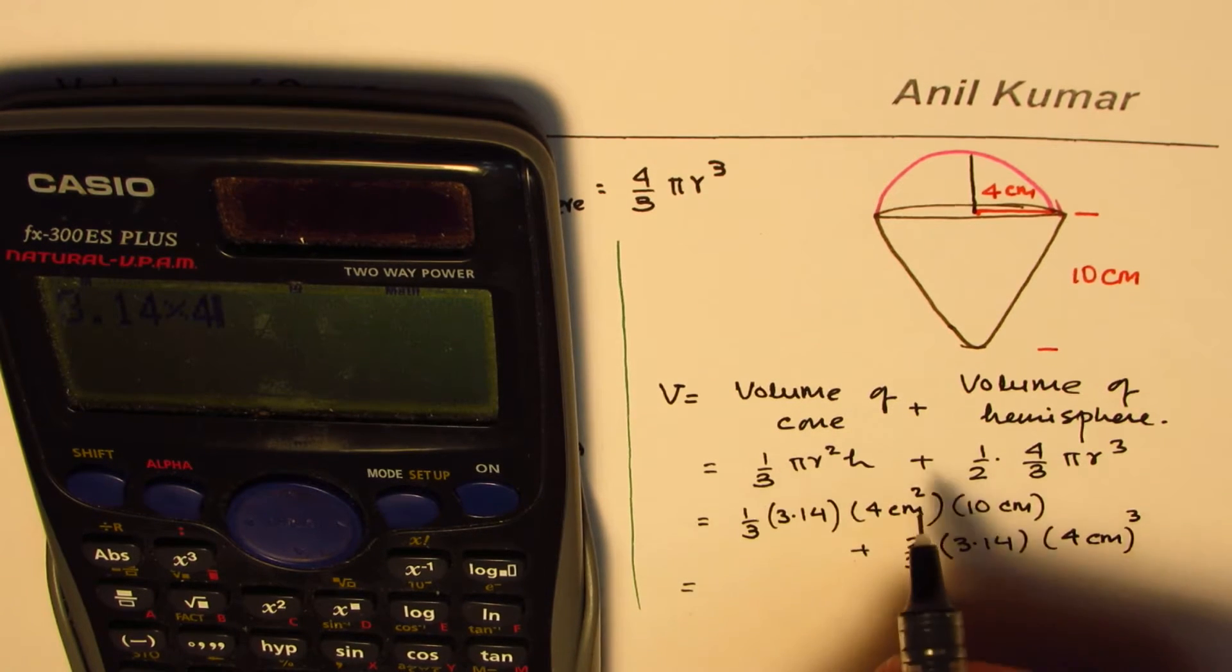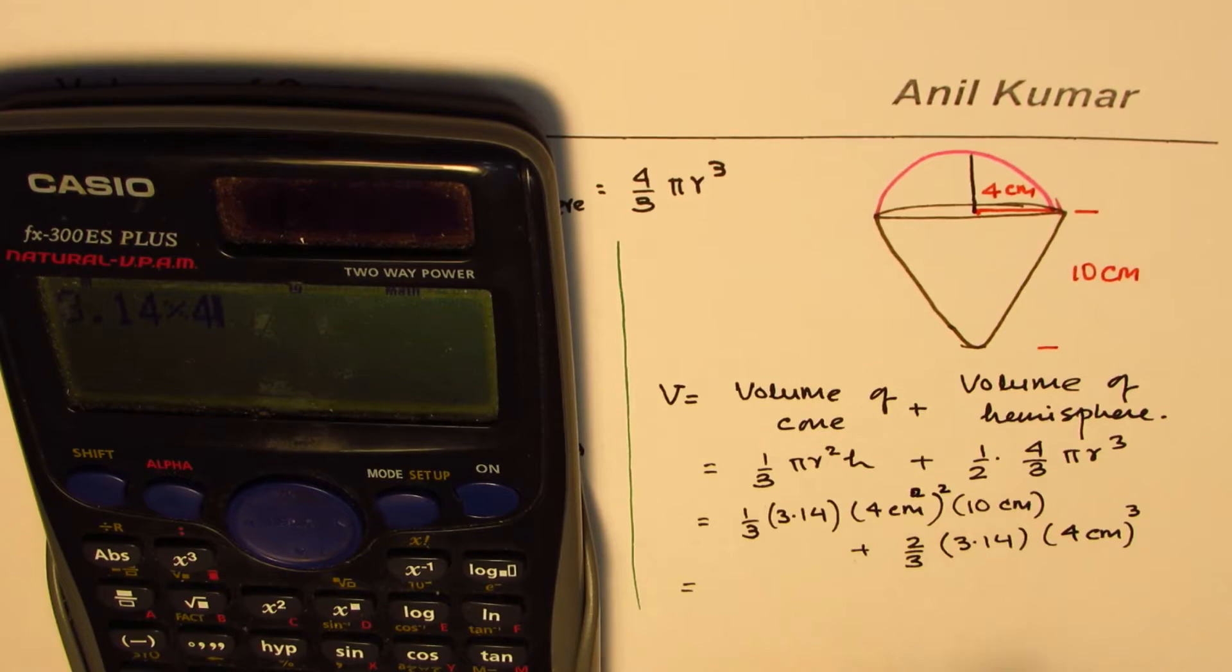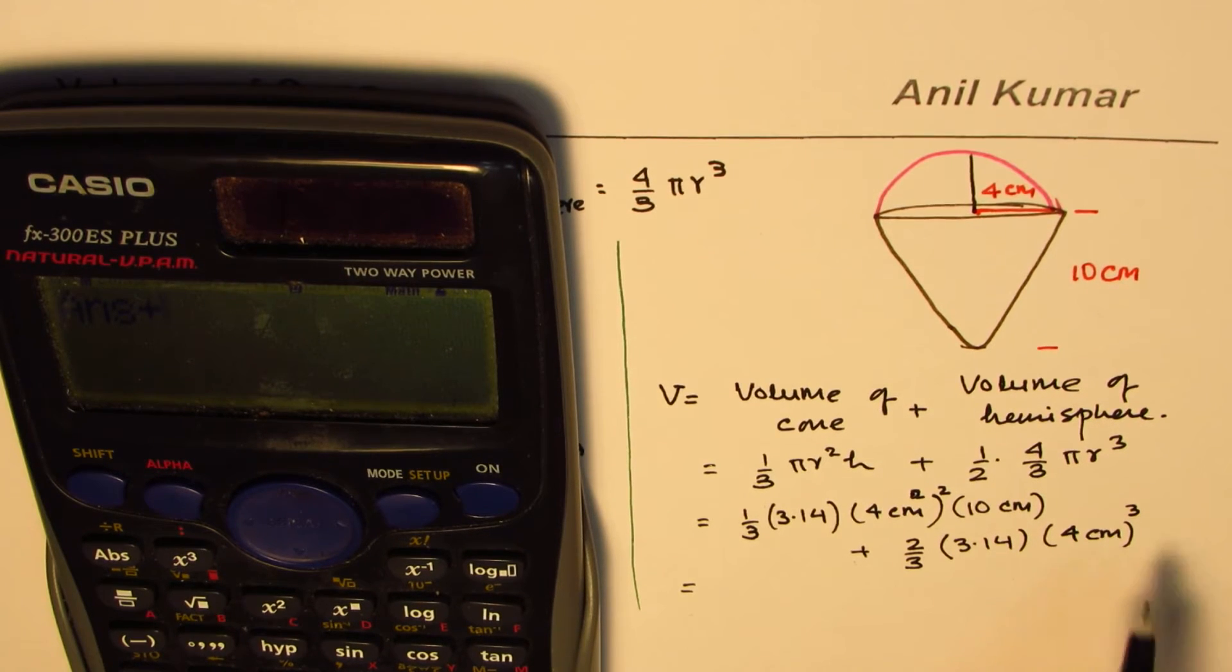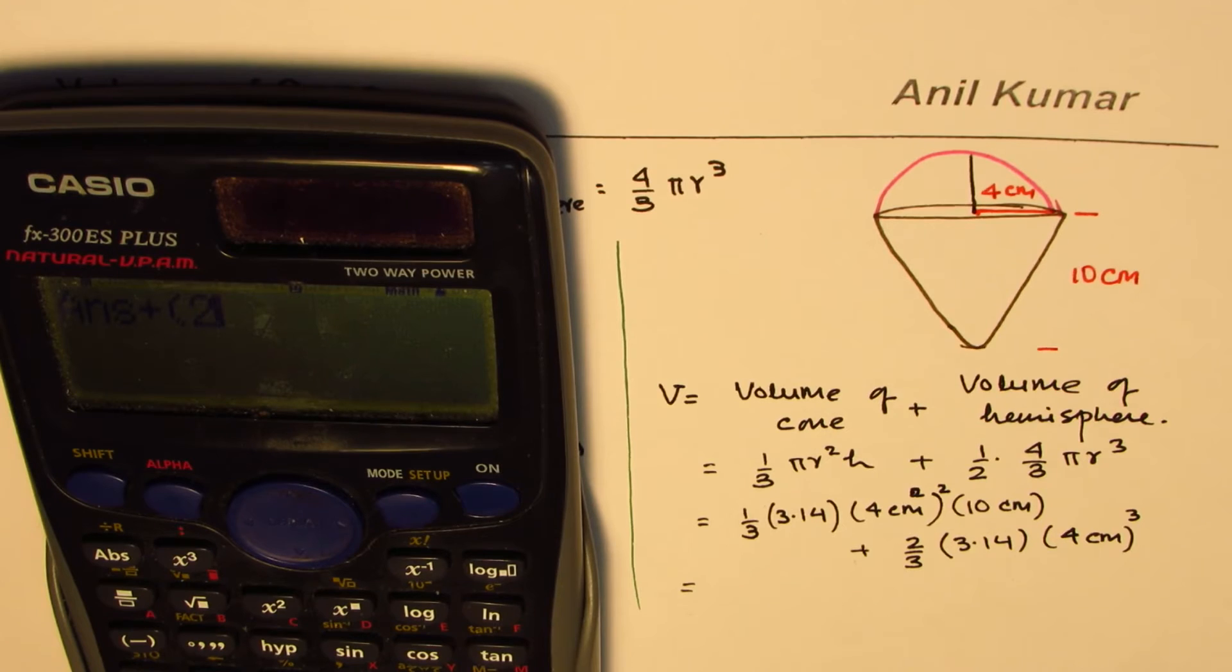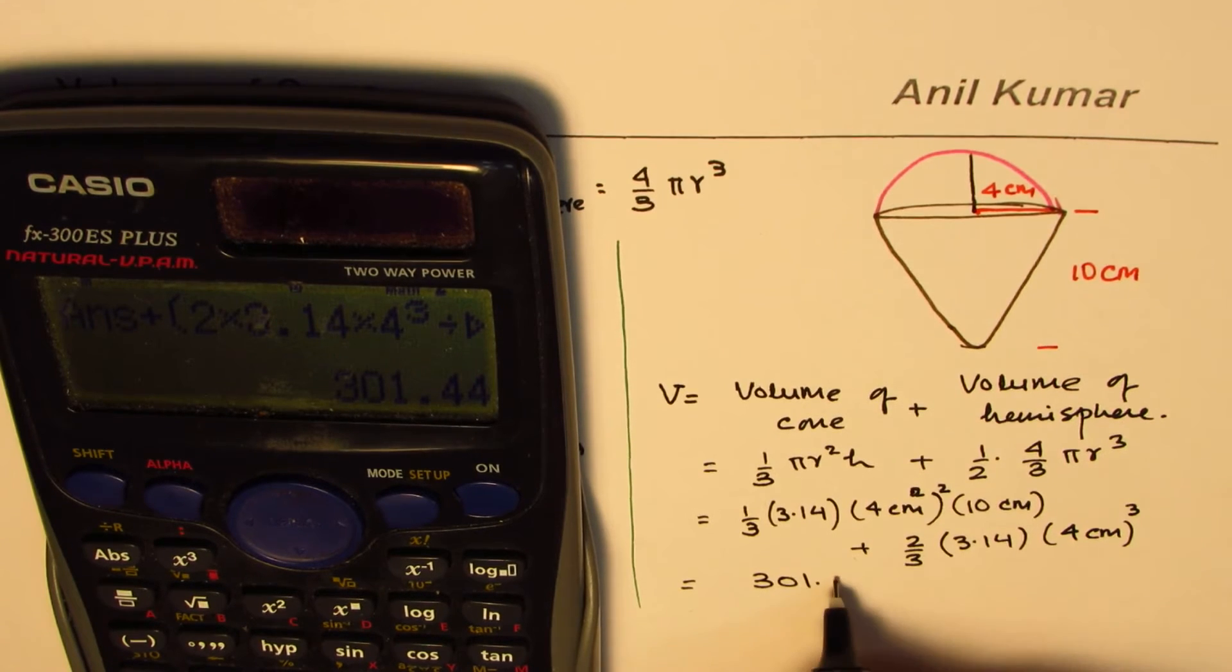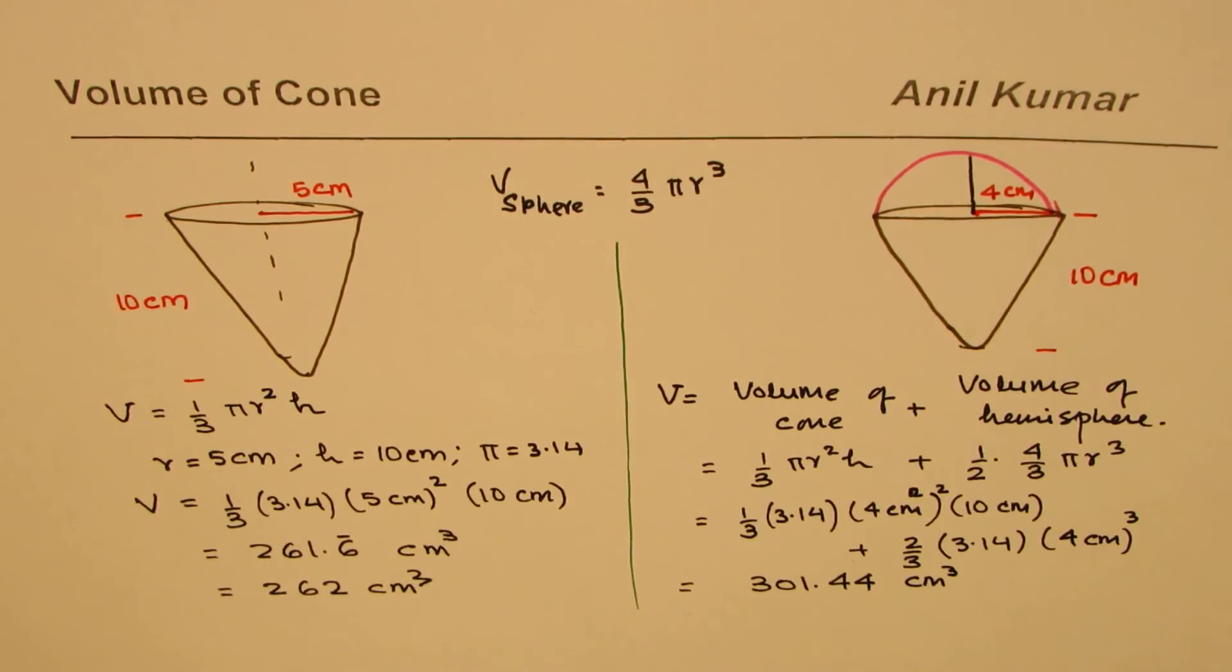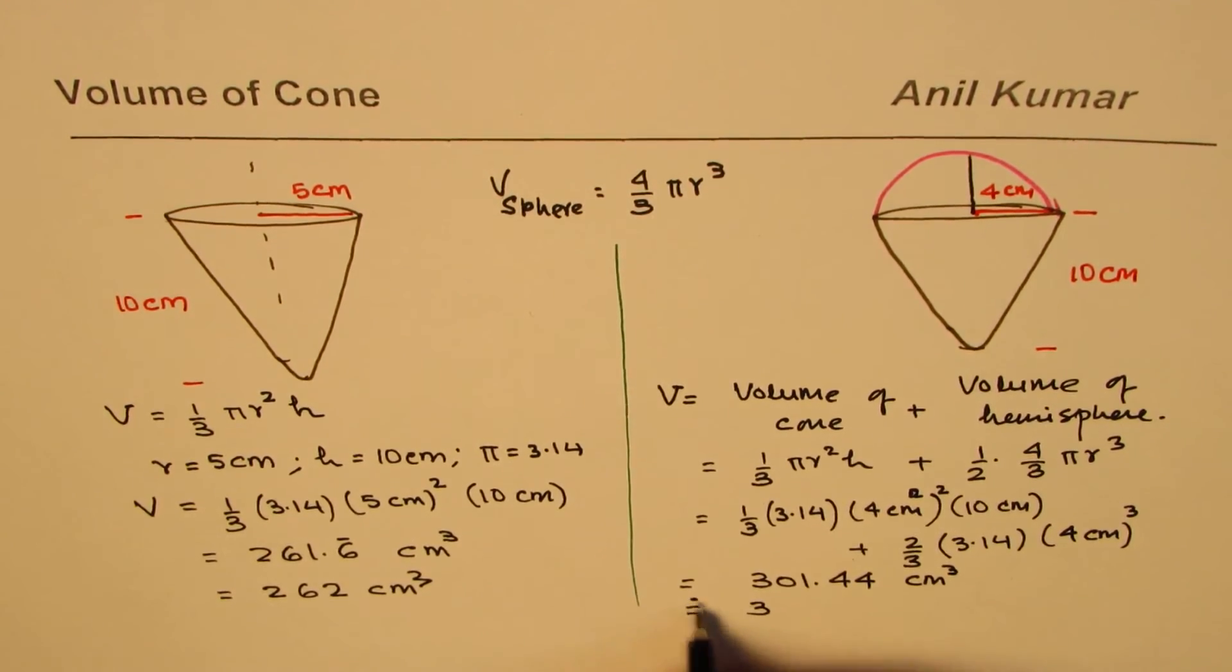Times 10 divided by 3. We have done the first part and we'll add two-thirds of this. Add within brackets 2 times 3.14 times 4 cube divided by 3 within brackets. Total volume of this is 301.44 centimeter cube which you can round to whole numbers as approximately 301 centimeter cube.